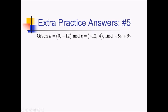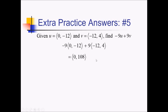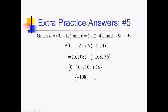For this problem, we've got these two vectors in component form and we want to figure out negative 9u plus 9v. I'm going to start by replacing u and v with their actual component forms — negative 9 times 0 comma negative 12, plus 9 times negative 12 comma 4. Next, let's distribute these constants: negative 9 times 0 is 0, and negative 9 times negative 12 is 108, giving 0 comma 108. Over here we have negative 108 comma 36. Now adding the x's and y's separately: 0 plus negative 108, and 108 plus 36, giving us negative 108 comma 144.